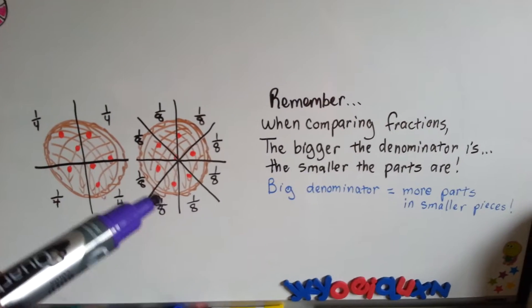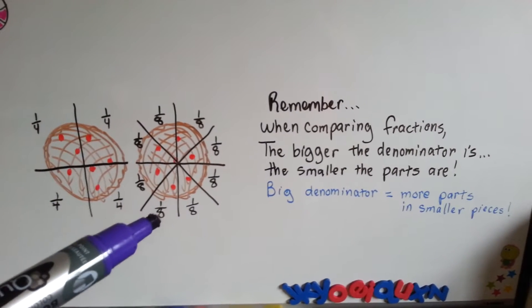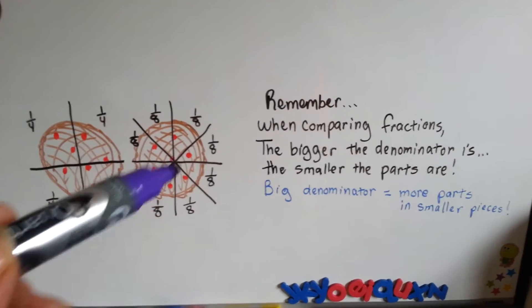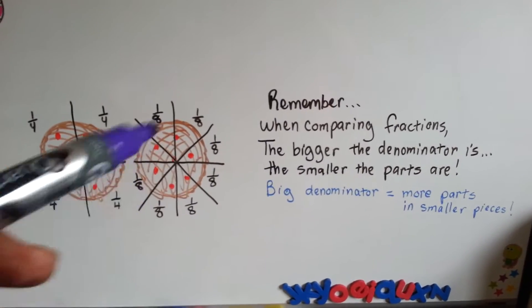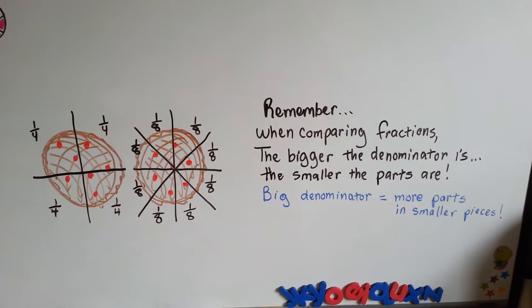Cutting a pie into 8 pieces gives you smaller pieces than if you cut it into 4 pieces. And even though 8 is a bigger number, it gives you a smaller piece, and more of them, because now there's 8 pieces compared to just 4 pieces. So, keep that in mind.